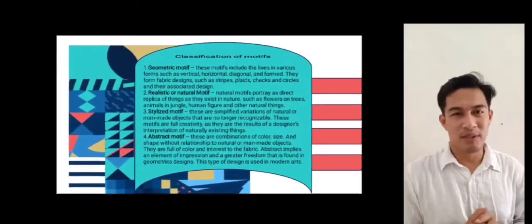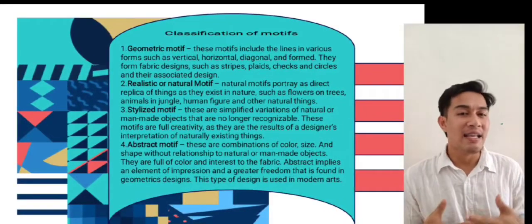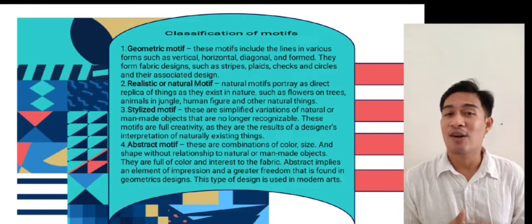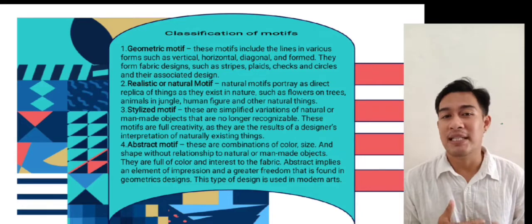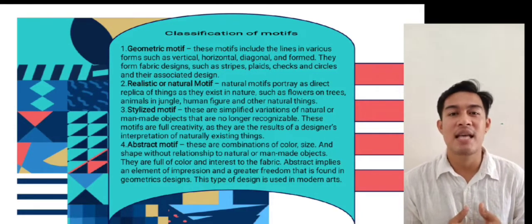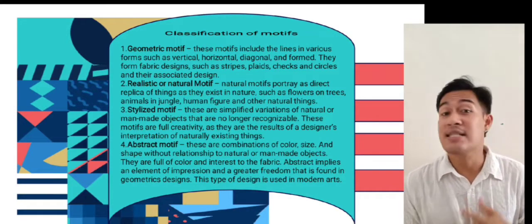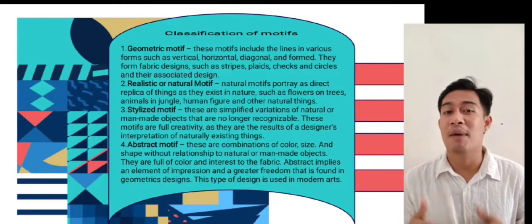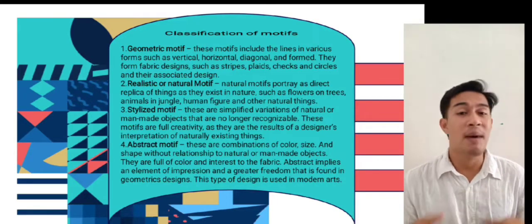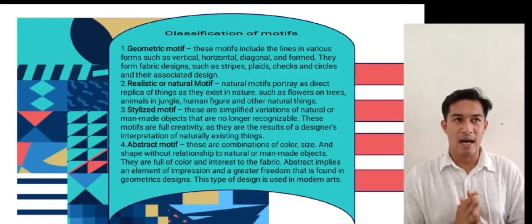Classification of Motives. First, geometric motif. These motifs include lines in various forms such as vertical, horizontal, diagonal, and curved. They form fabric designs such as stripes, plaids, checks, and circles, and their associated designs — or in other terms, carvings. These carvings often appear in weddings and debuts to add visual allure for visitors and make the theme more beautiful.